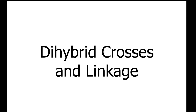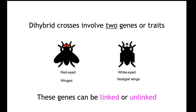Let's take a look at dihybrid crosses and linkage. A dihybrid cross involves two genes or traits. For example, one gene could be for eye colour — red versus white — and the other for wing type, whether it's normal wings or vestigial wings.